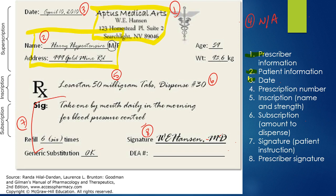For number three, you'll see that the date is included. This is the date that the patient received the prescription. It may not be the same as the date that the patient gave you the prescription — it may be like a month ago or maybe two days ago.